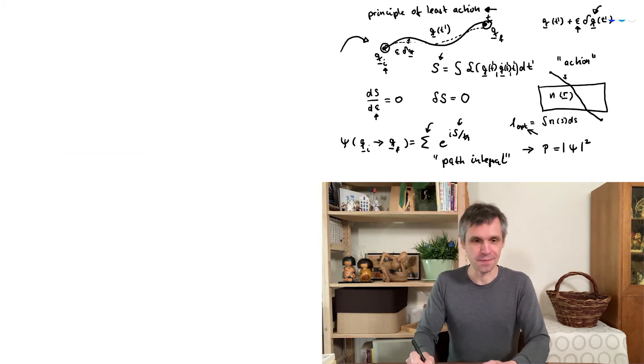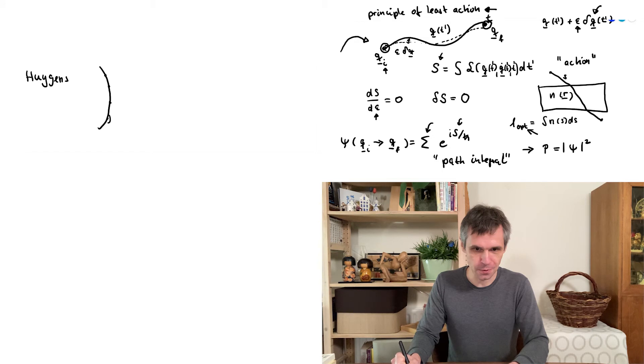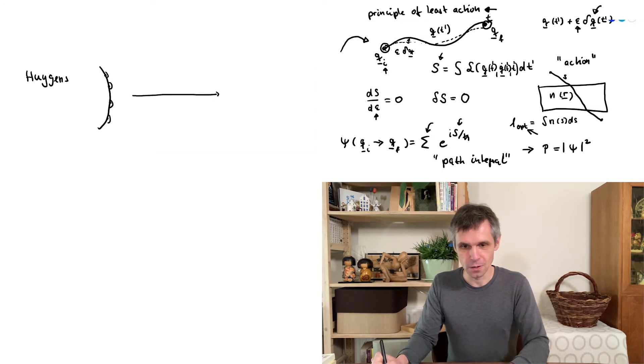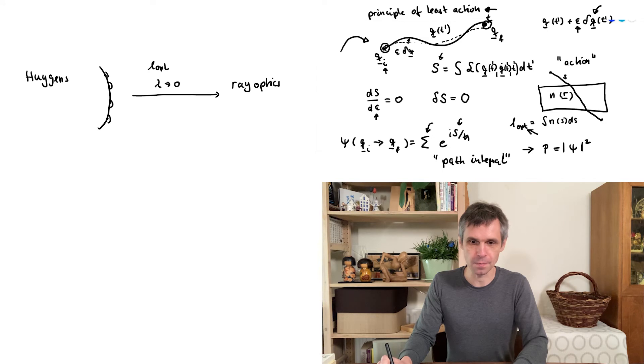So from this we would then obtain the probability for this process simply by squaring this amplitude. Now interestingly this is very closely related to the idea of Huygens of taking wave fronts and sending spherical waves from the different positions along the wave front and describe wave propagation in this way. And then if you take the limit of a small wavelength you can use this idea to derive ray optics.